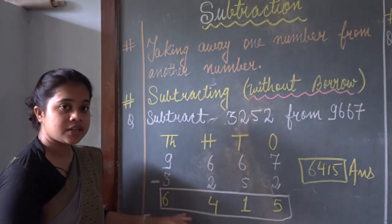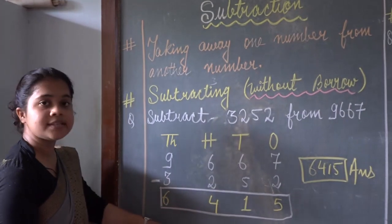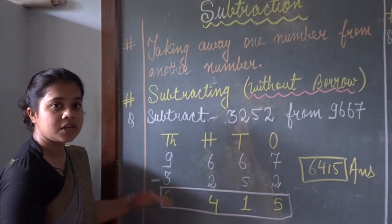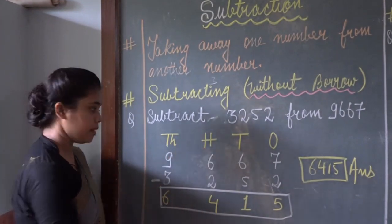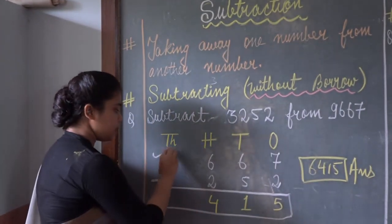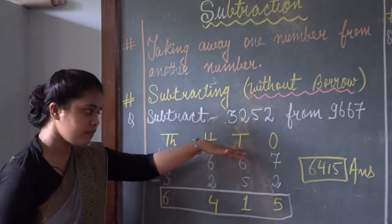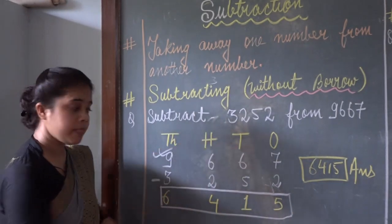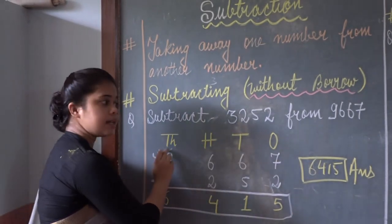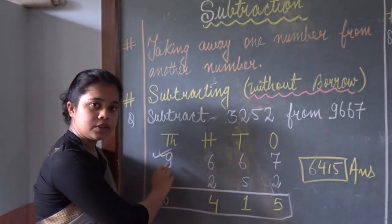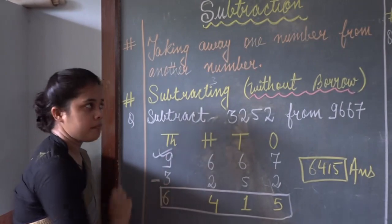So this is the answer after subtracting. The result you get after subtraction is known as the difference. The result you get after addition is known as sum, but here the result you get after subtraction is known as difference. And in subtraction, always remember that the greater number is on top — you cannot write 3252 on top.